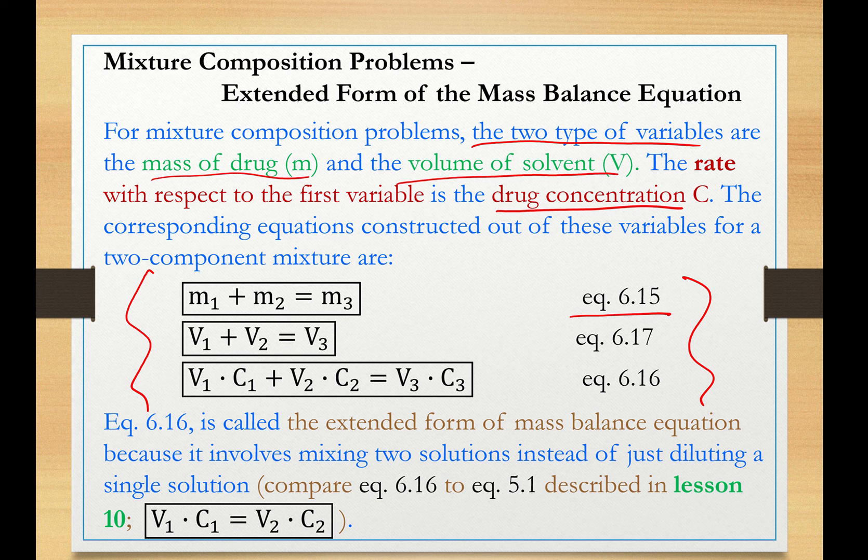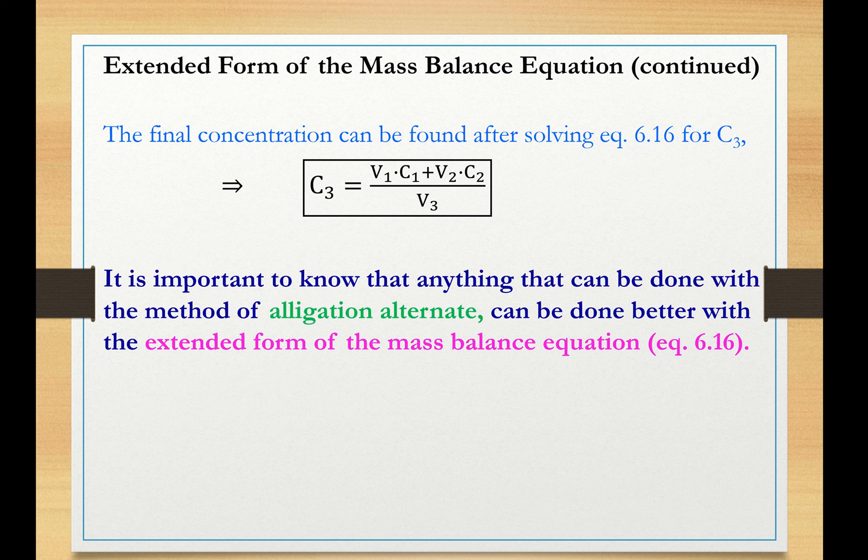Equation 6.15, which is the preservation of the mass of drug before mixing and after mixing. Equation 6.17, which is the equation related to the preservation of volume before and after mixing. And equation 6.16, which is also called the extended form of mass balance equation because it involves mixing two solutions instead of just diluting a single solution, as we have seen in lesson 10, equation 5.1. Now, the final concentration in the mixture can be found after solving equation 6.16 for C3. It is important to know that anything that can be done with the method of allegation alternate can be done much better with the extended form of the mass balance equation.